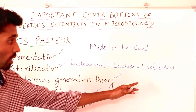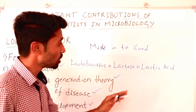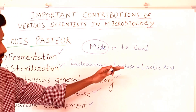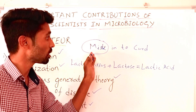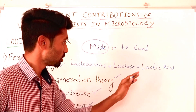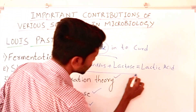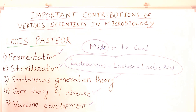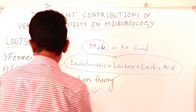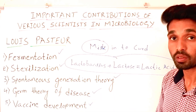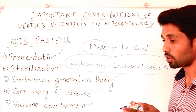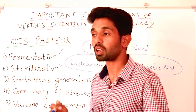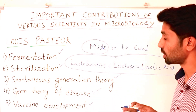Lactic acid helps to convert the whole milk into curd. This process of conversion is called the fermentation process. Fermentation is any metabolic process in which microorganisms' activity creates a desirable change in food and beverages.